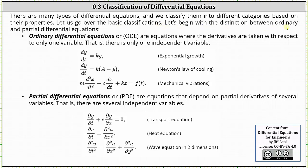Let's begin with the distinction between ordinary and partial differential equations. Ordinary differential equations, or ODEs, are equations where the derivatives are taken with respect to only one variable — that is, there is only one independent variable. Below we have three examples: the exponential growth equation, Newton's law of cooling, and the mechanical vibrations equation.